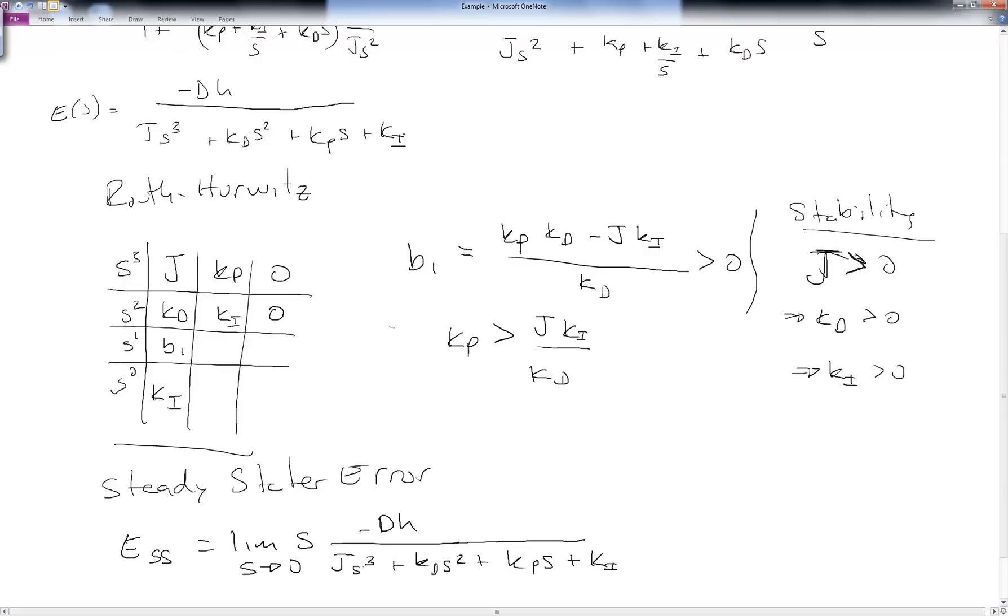We can go ahead and now take our limit. Now, notice what happens here. I can let s go to zero. All these terms go to zero, zero, zero. But this term, ki, is left over. And this term in the numerator goes to zero. So I'm just left with zero over ki. Well, that's just zero. So yay, our system worked.